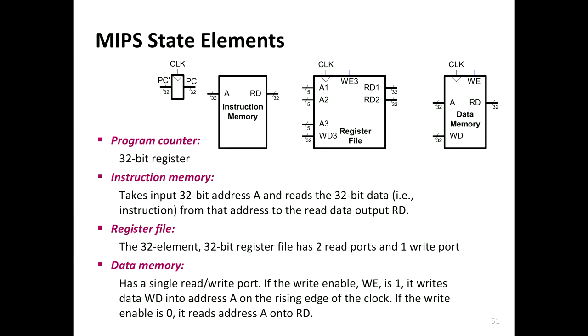Importantly, the register file has two read ports so you can simultaneously read two registers, and one write port so you can write into one register. This is implemented for R-type instructions where we have three register operands — you read simultaneously from two registers and write back into one. Finally you have the data memory which stores data that cannot fit into the register file.